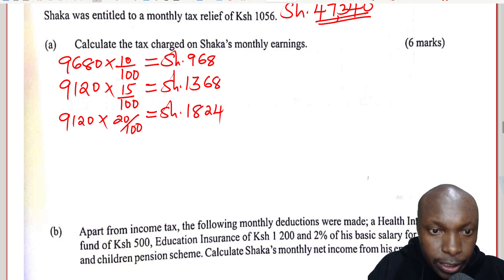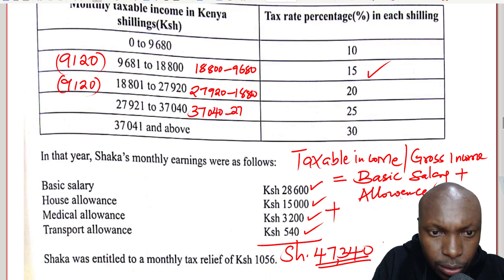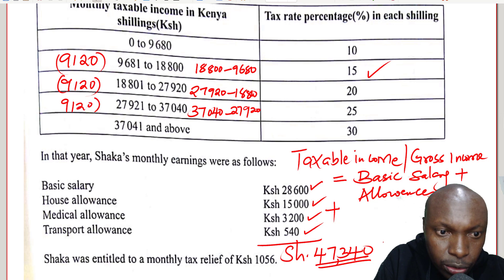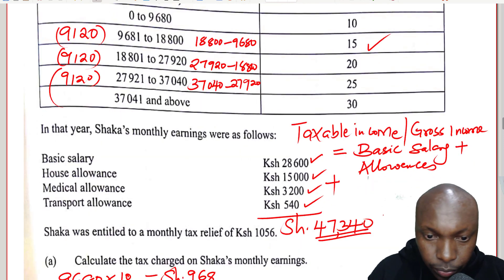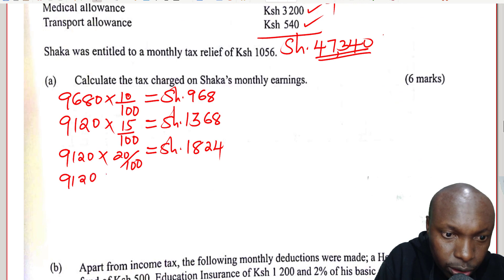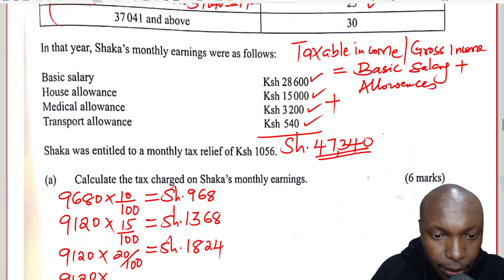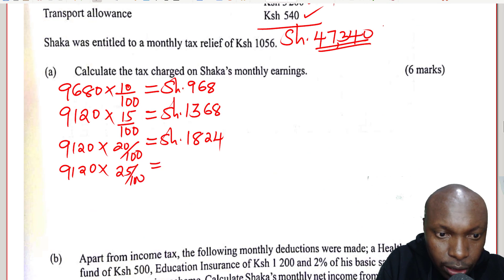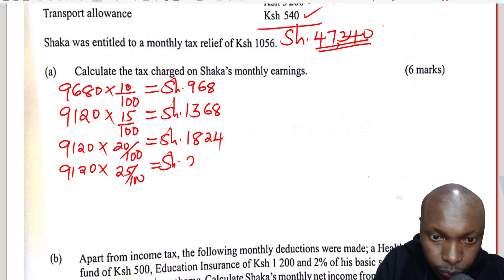Then we proceed to the next slab. The next slab is 37,040 subtract 27,920. Notice again the size will be 9,120. So 9,120 multiplied by the percentage for that slab, which is 25%, gives 2,280.